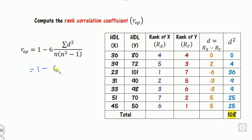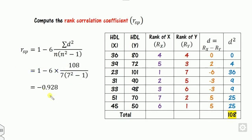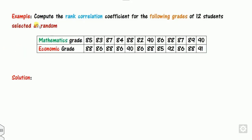Now substitute all values into the equation. The numerator is 6 times the sum of d², which equals 6 times 108. The denominator is n(n²−1), where n equals 7, so 7 times (49 minus 1). After calculation, you get the rank correlation coefficient between HDL and LDL, that is between x and y. This is how you calculate the rank correlation coefficient.